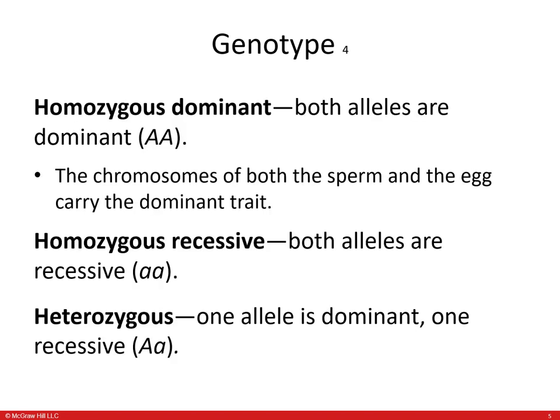There are different genotypes. Homozygous dominant means both alleles are dominant, so you have two uppercase letters — both the egg and the sperm carry the dominant trait. Homozygous recessive means both alleles are recessive, so you have two lowercase letters. Heterozygous means one allele is dominant and one is recessive, so you have one uppercase and one lowercase letter.